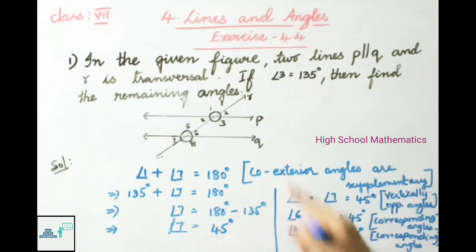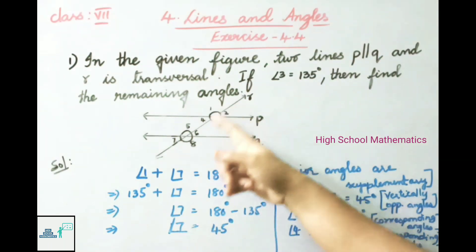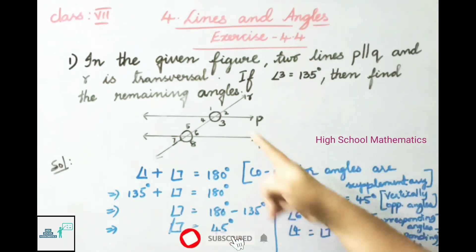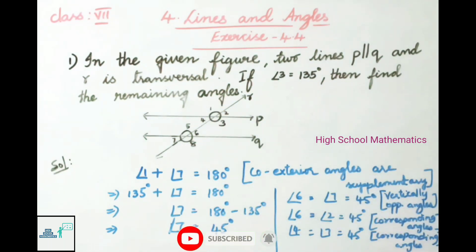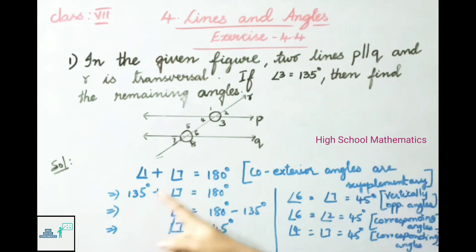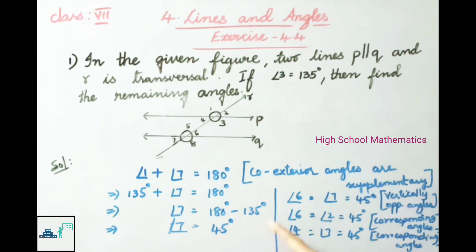Angle 1 and angle 7 are co-exterior angles, so the sum of these two exterior angles is supplementary. So angle 1 plus angle 7 equals 180 degrees. We know angle 1 is 135 degrees, so 135 plus angle 7 equals 180 degrees. Transposing: angle 7 equals 180 minus 135, that is 45 degrees.